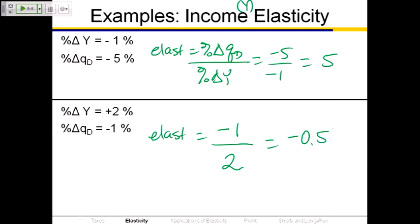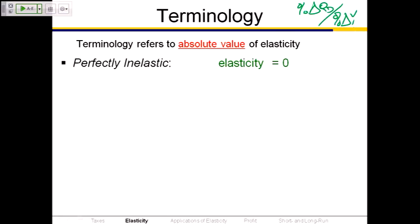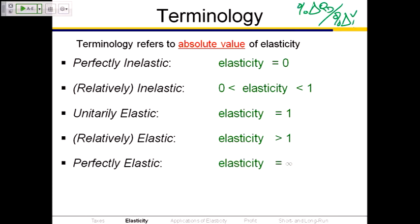We have terminology to describe different values of elasticity, and it applies to the absolute value. If demand is perfectly inelastic, that elasticity value is 0 — no matter what happens to income, quantity demanded doesn't change. If demand is relatively inelastic, the absolute value of elasticity is between 0 and 1. In the middle, we have unit elasticity — elasticity exactly equals 1, meaning the percentage change in quantity demanded equals the percentage change in income. If elasticity is greater than 1, demand is relatively elastic. If elasticity is infinitely large, it's perfectly elastic. Most real-world cases fall into relatively inelastic or relatively elastic.